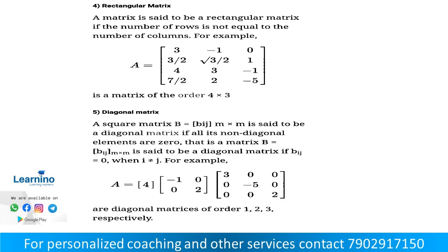The next one is rectangular matrix. A rectangular matrix is just the opposite of a square matrix. A matrix is said to be a rectangular matrix if the number of rows is not equal to the number of columns. For example, a matrix with 4 rows and 3 columns is a rectangular matrix.